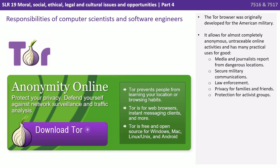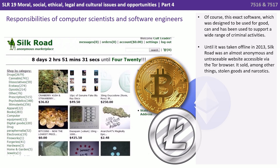The Tor browser was originally developed for the American military. It allows for almost completely anonymous, untraceable online activities and has many practical uses for good. Media and journalists report from dangerous locations with anonymity. It can be used for secure communications, law enforcement, privacy for families and friends, and protection for activist groups. Of course, this exact software, which was designed to be used for good, can and has been used to support a wide range of criminal activities. Until it was taken offline in 2013, Silk Road was an almost anonymous and untraceable website accessible via the Tor browser. It sold, amongst other things, stolen goods and narcotics.